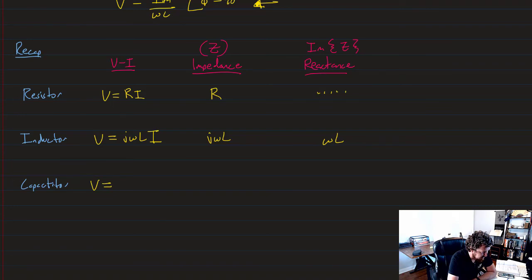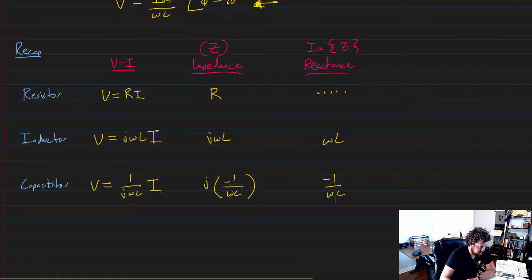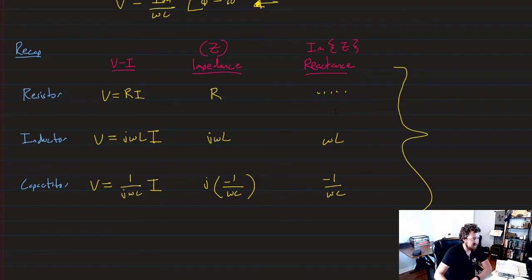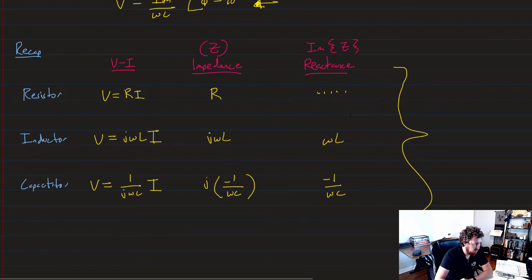Now for capacitors, V is equal to one over j omega C times I. The impedance here is a little bit different. We have to multiply by j over j to bring the j up to the top. So what happens here is we get j times negative one over omega C, which means its reactance is negative one over omega C. So there we go. If you aren't paying attention to anything else, here's the take-home stuff, the good part to remember. What the V I relationships are, what the impedance is, what is the reactance.